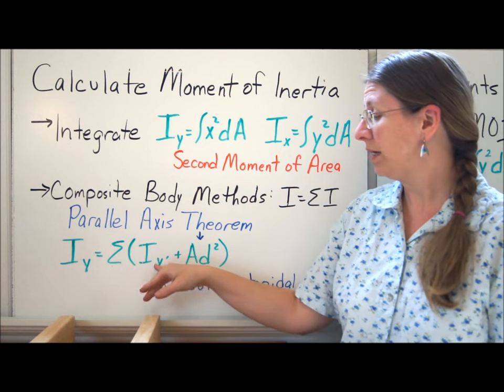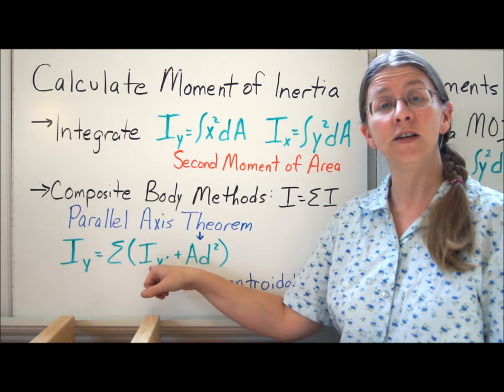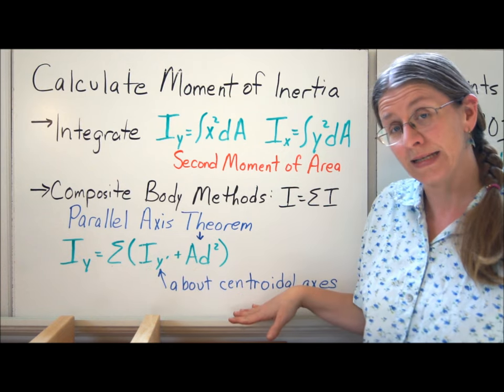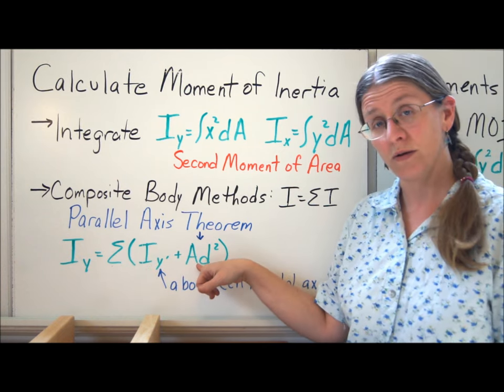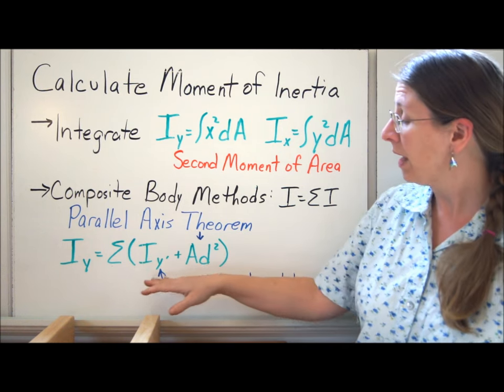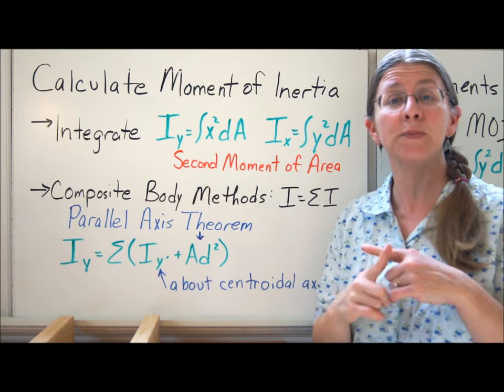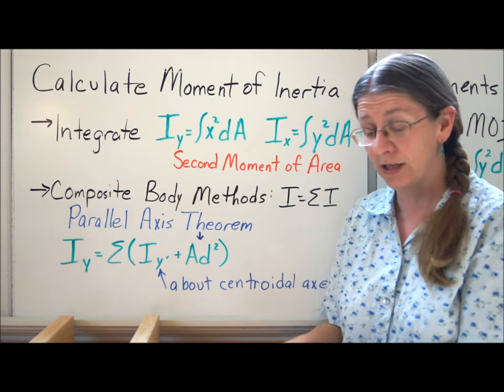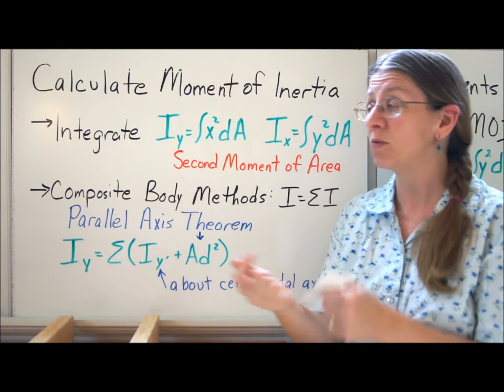That we use the parallel axis theorem for. The parallel axis theorem says that what we can do is we can take all of the individual moments of inertia as if they were about the centroidal axes and then add A times d squared to find out what the new one is. And we're going to do that in just a minute. A centroidal axis is just any system of coordinate axes that goes through the centroid of your cross section. Remember, it's the cross section that we're talking about.